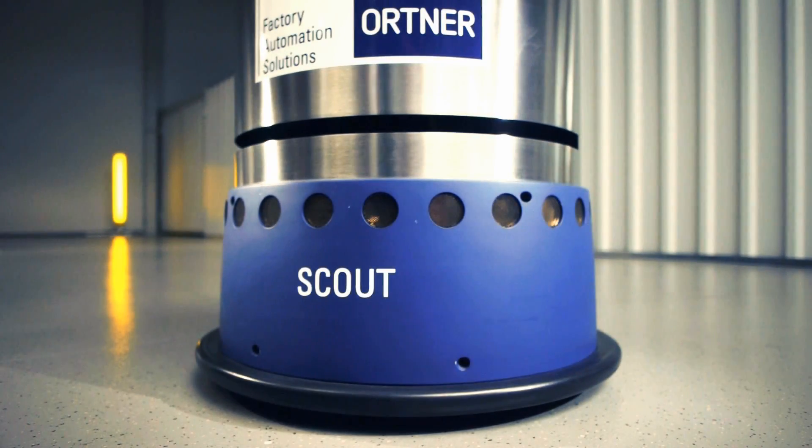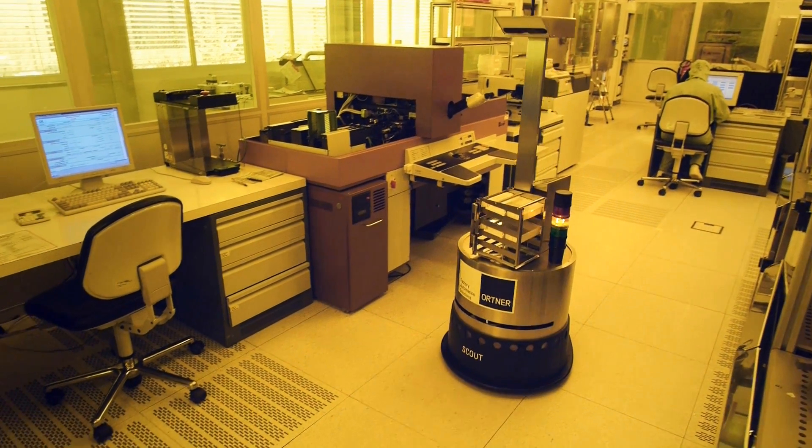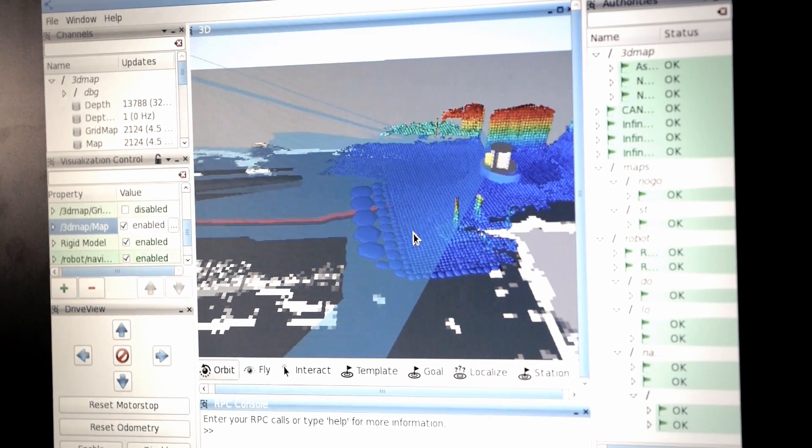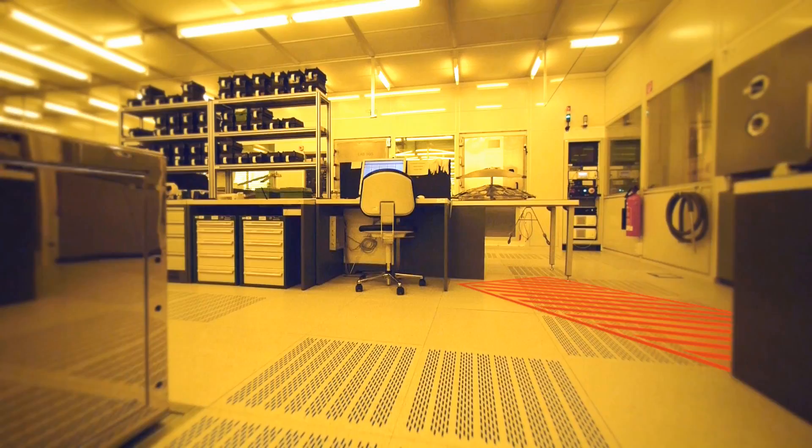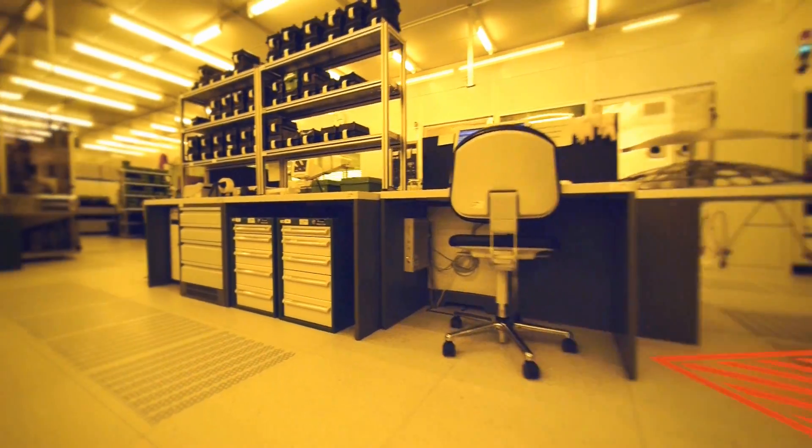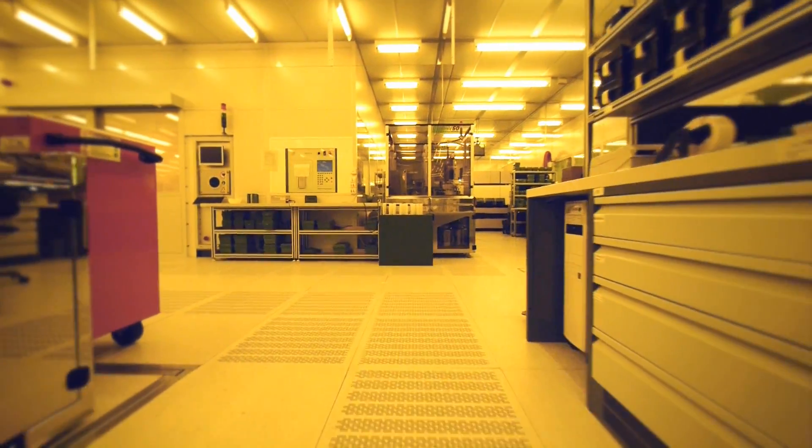In order to meet highest cleanliness requirements, the wheels are concealed for lowest particle emission. After initial mapping, Scout finds its way through the fab autonomously. We can also define no-go areas such as stairs, for instance, or speed zones where Scout then operates at a given speed.